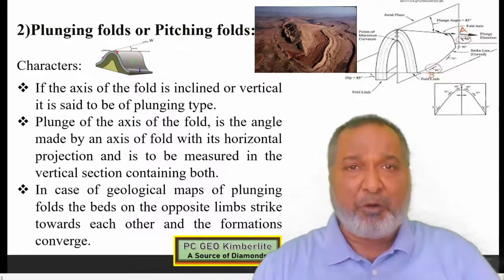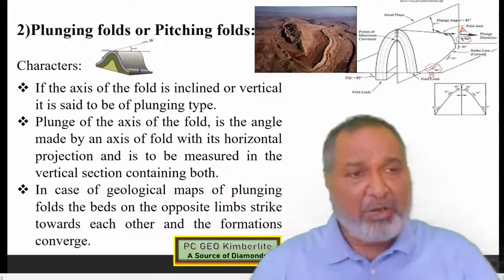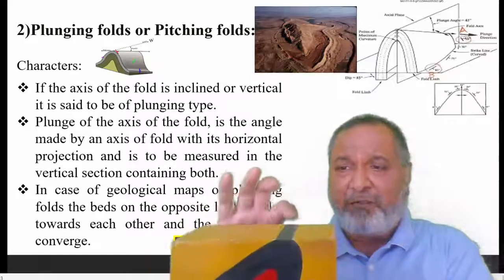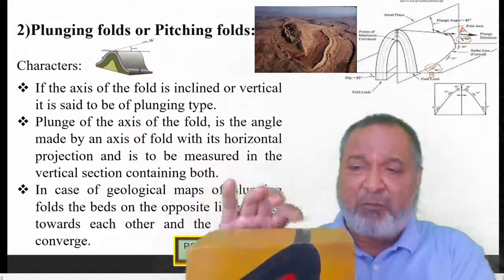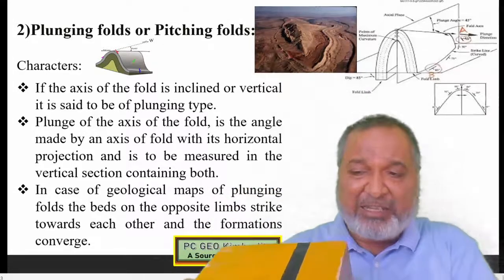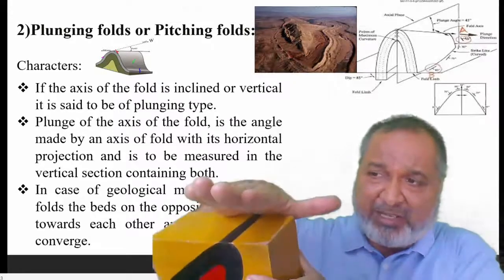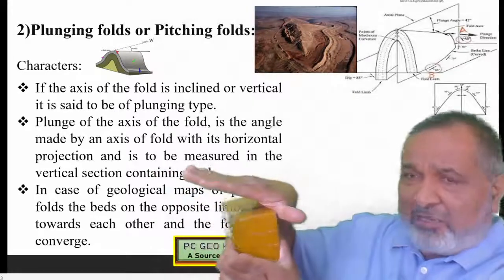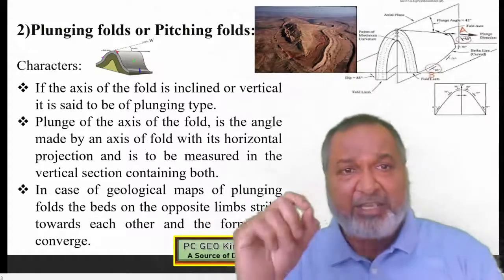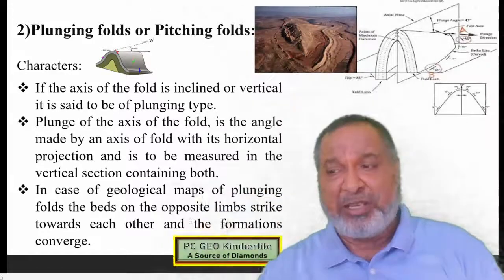The next one is plunging fold or pinching fold. In this, the axis of the fold is inclined. Whatever fold we have — if the axis of the fold is parallel to the horizontal surface, it is non-plunging. But once this axis is inclined and makes an angle with the horizontal surface, this is called the plunging fold. If the axis of the fold is inclined or vertical, it is said to be a plunging type.